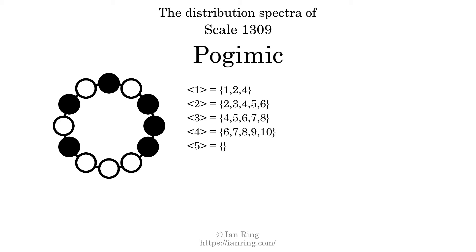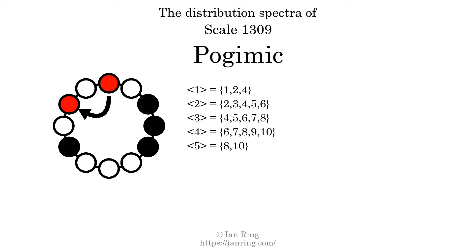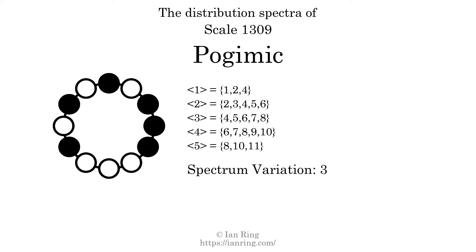And finally, the generic interval of 5 scale steps comes in 3 different specific interval sizes: 8 semitones, 10 semitones, and 11 semitones. The spectrum width of this generic interval is 3. The spectrum variation is the sum of all the widths divided by the number of tones. The spectrum variation of this scale is 3.